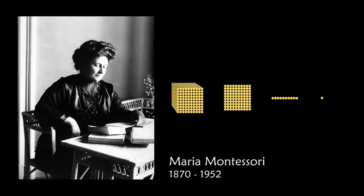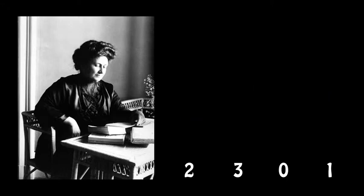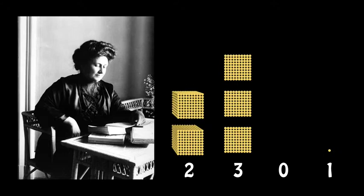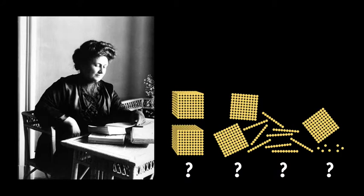Maria Montessori used manipulatives to teach mathematics to children. Does her number system use place value like a Chinese abacus, or is it more similar to the ancient Egyptian number system? The first clue is that, like the ancient Egyptian number system, it lacks a symbol for 0. The second clue is that you could drop all the blocks and someone could still figure out what number you had built. Here I've scrambled them — can you figure out what number I had built?